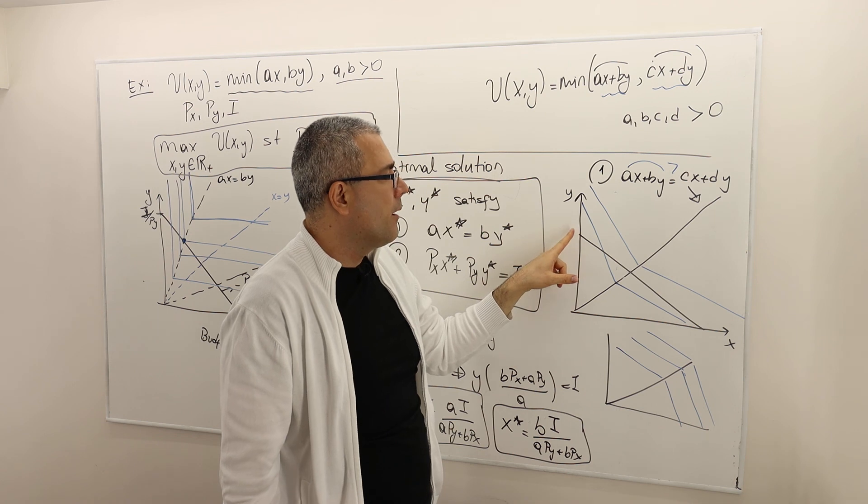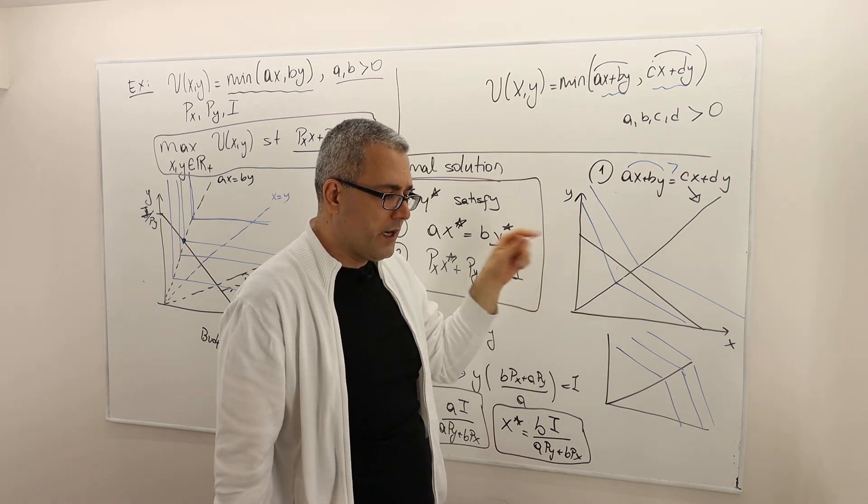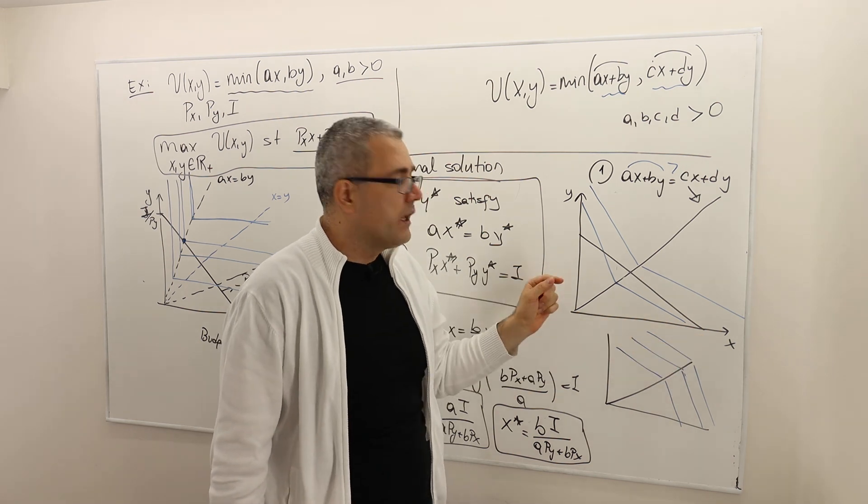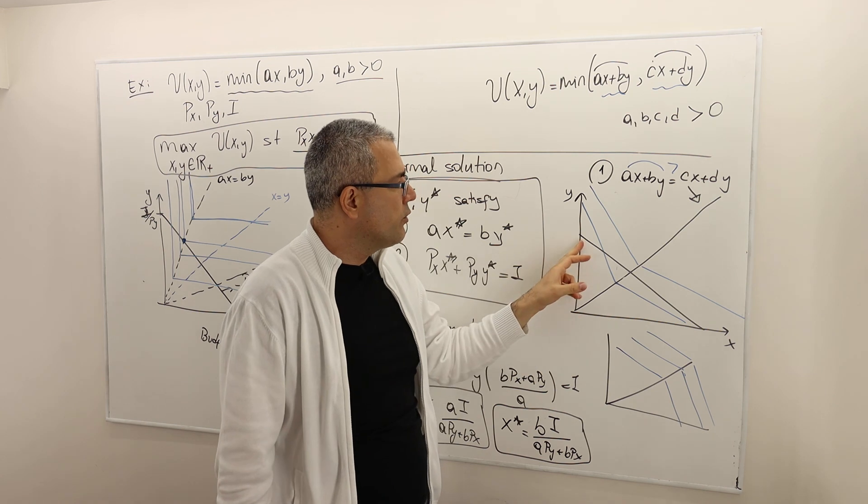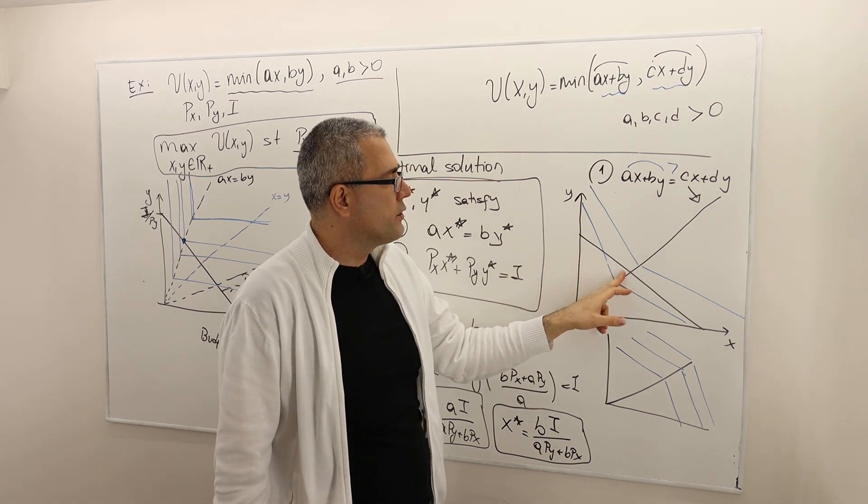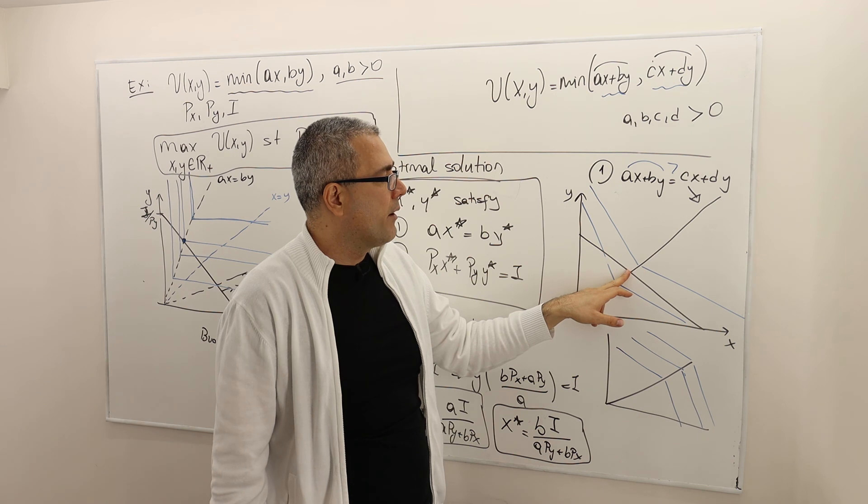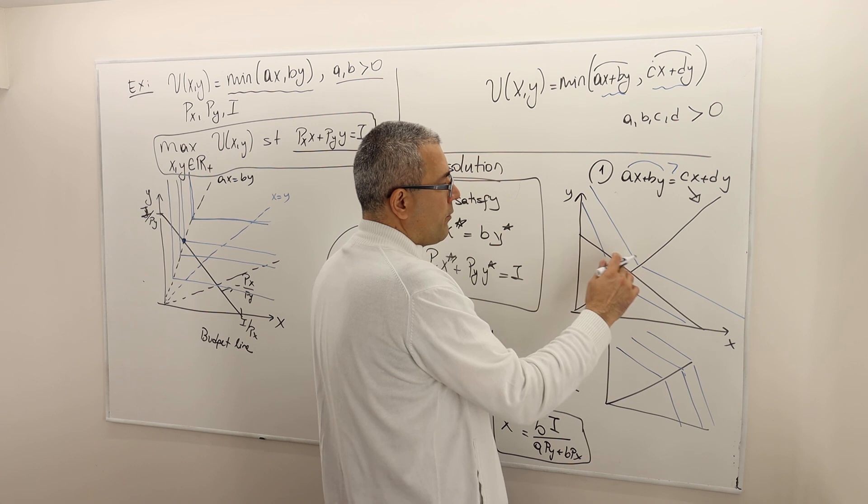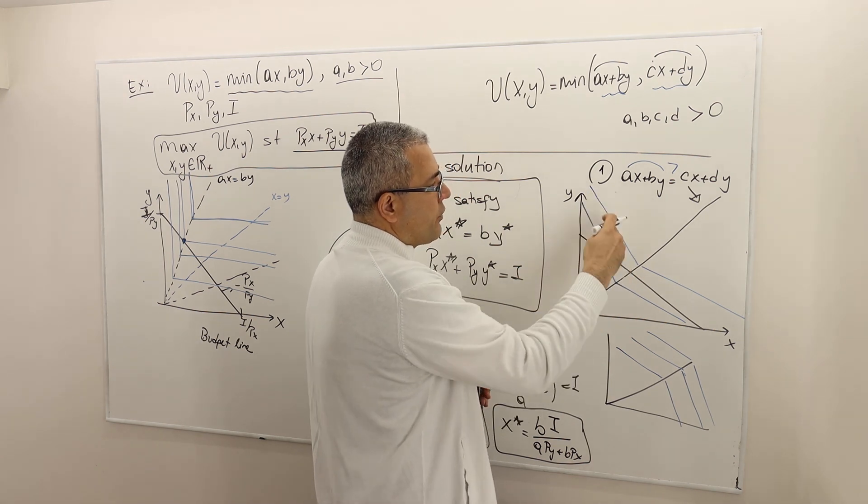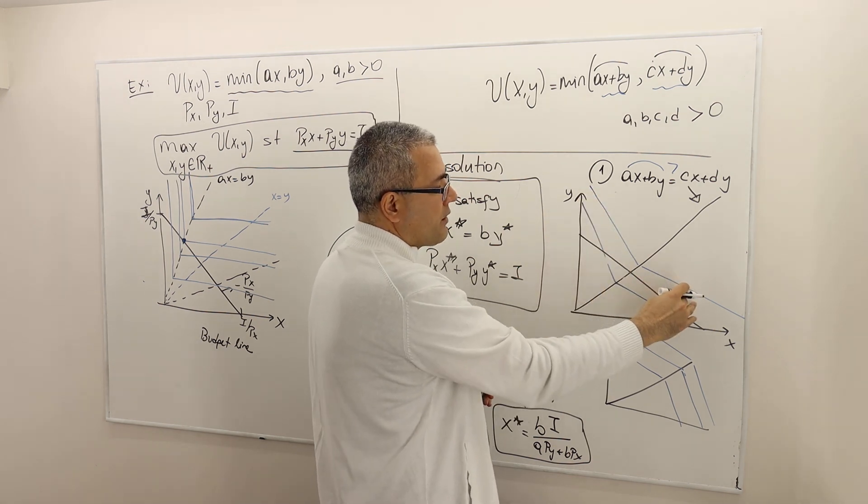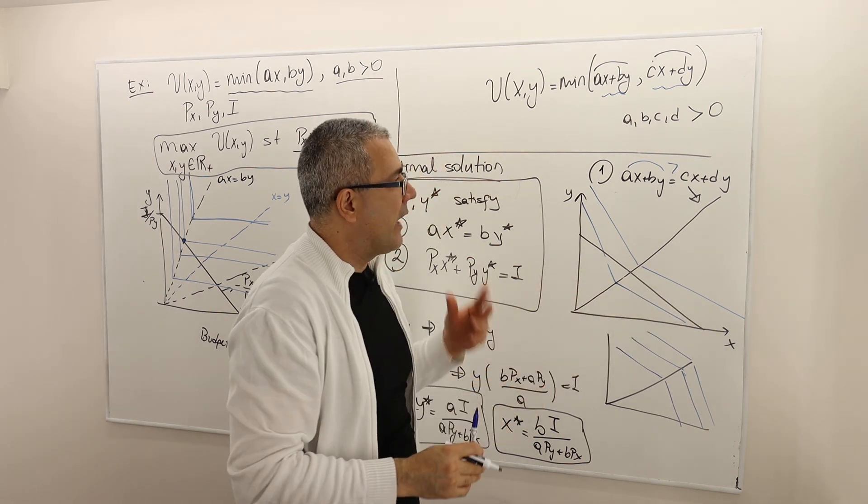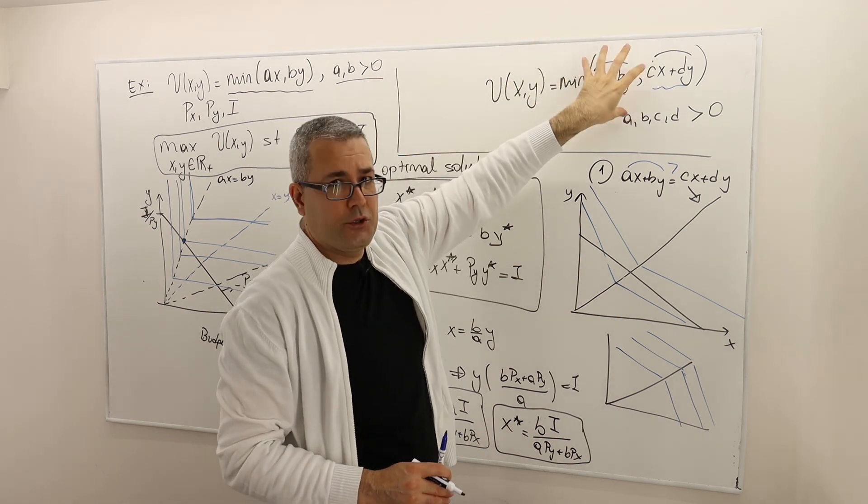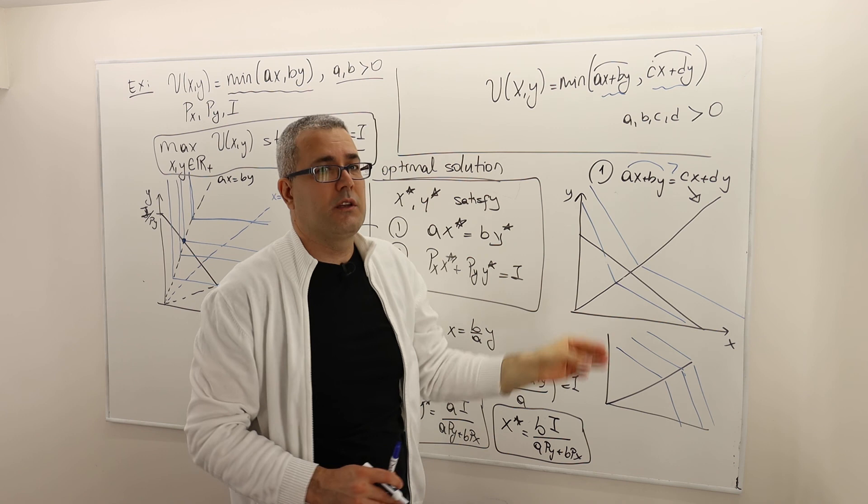The optimal can be at the one boundary where you consume your entire income on good Y or the opposite boundary, X. Or it may be the interior solution where you are either consuming all the points on this part of the budget line or the lower part of the budget line, depending on whether your budget line and the indifference curves, the upper side or the lower side are maybe tangent to each other. So again, you have to compare three slopes, slope of the first line, first term, slope of the second term, and the slope of the budget line.